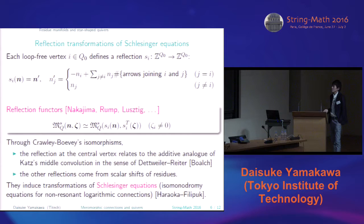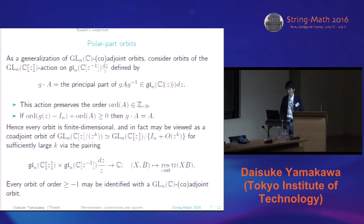So they induce transformations of Schrödinger equations, the isomonodromy equations for non-resonant logarithmic connections. So these reflections give, roughly speaking, the Weyl group symmetry of Schrödinger equations. But note that this Katz's middle convolution changes the rank of the connections. So they may change the matrix size of Schrödinger equations.